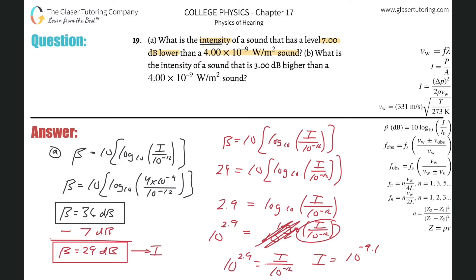So now if you wanted to just plug that in if you needed a decimal value, this is going to be 7.94 times 10 to the minus 10th. And that's in watts per meter squared. And that would be the value. That's the intensity.